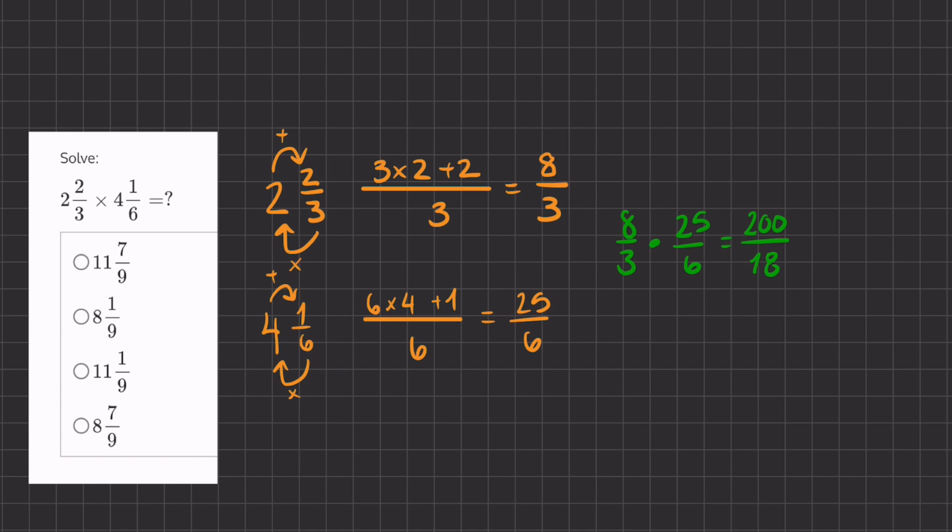Now we have to turn this improper fraction into a mixed number. We'll ask ourselves, how many times does 18 go into 200? The answer is 11. And we want to know how much we have left over from 200. So 18 times 11, that's 198. We'll subtract these two numbers to get a remainder of 2, so 2 over 18.